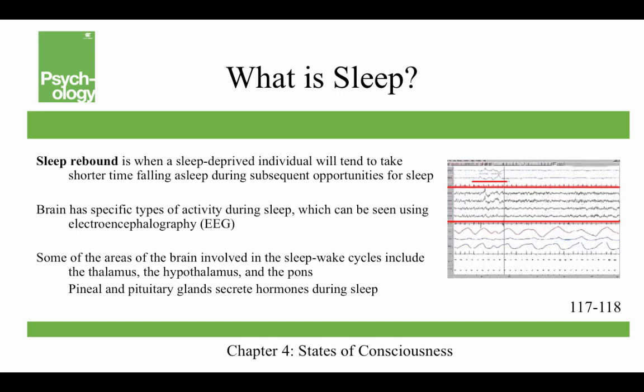The brain has specific types of activity during sleep, and this can be seen using EEGs. Some of the areas of the brain involved in the sleep-wake cycle include the thalamus, the hypothalamus, and the pons. The pineal gland releases melatonin during sleep, and the pituitary gland secretes growth hormone during sleep as well.